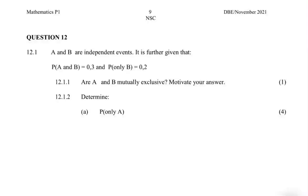A and B are independent events. It is further given that the probability of A and B is 0.3, the probability of only B is 0.2. Question 12.1.1 asks: are A and B mutually exclusive? Motivate your answer.